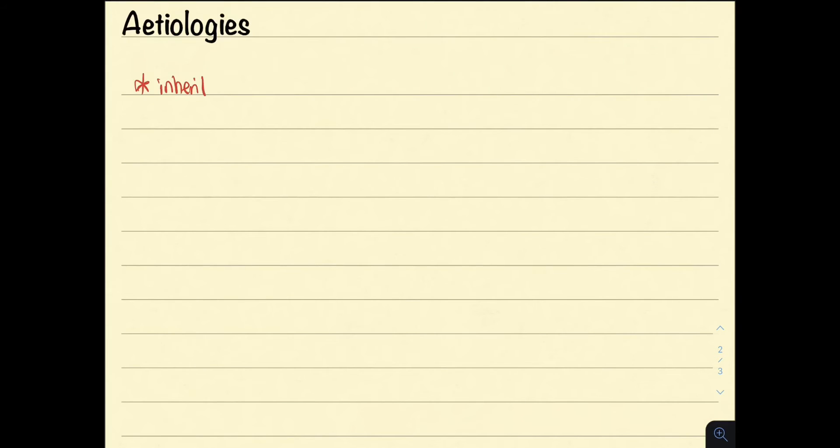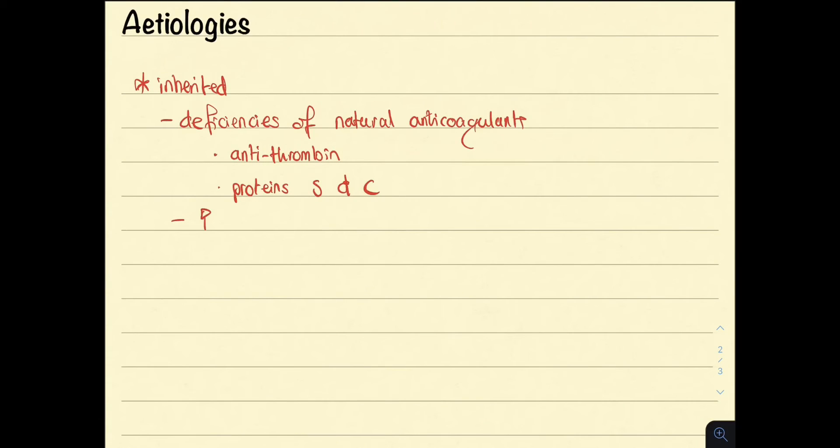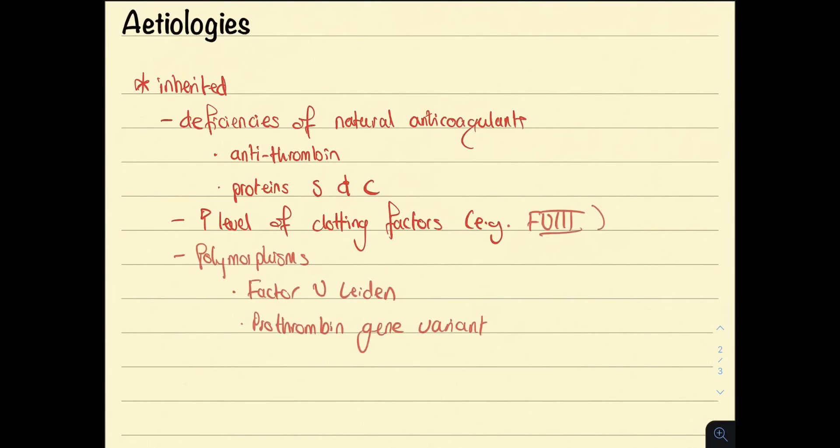Let us consider the causes of thrombophilia. These can be inherited, for example deficiencies in natural anticoagulants such as antithrombin and proteins S and C. We could also have an increased level of clotting factors, for example factor VIII, and we could also have inherited polymorphisms, such as factor V Leiden and prothrombin gene variant.